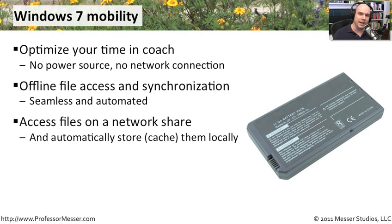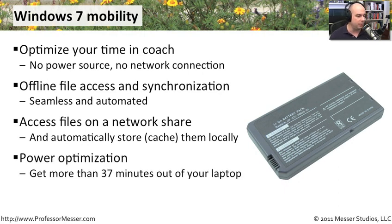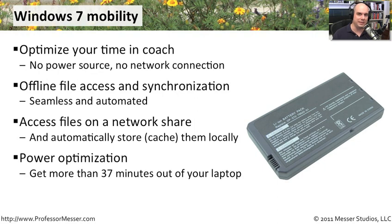You would also like to be able to access files on a network share, and then when you disconnect from the network, still have those files available to you. And find a way to make access to those files faster, especially on slow network connections that you tend to get on a mobile device in a hotel or on an unknown network. Power optimization is extremely important on mobile devices — you want to optimize that battery and get just a few more minutes out of it. We're going to go through all of these scenarios on a Windows 7 operating system.